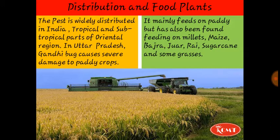अगर हम इसके distribution और food plants के बारे में जानकारी लें, तो mostly India में इसका distribution tropical और subtropical parts of oriental region में है, जिसमें सबसे ज़्यादा paddy crop को damage करने वाली Gundibag उत्तर प्रदेश में देखी जाती है। Food plants में paddy के अलावा maize, bajra, jowar, rye, sugarcane, और अन्य grasses पर भी यह देखी जाती है।